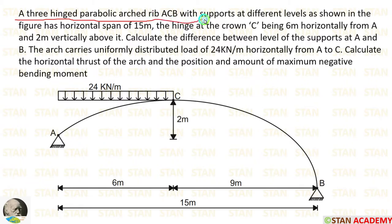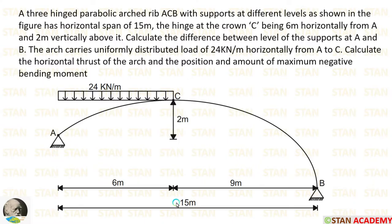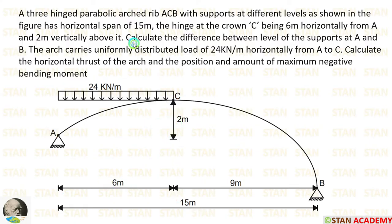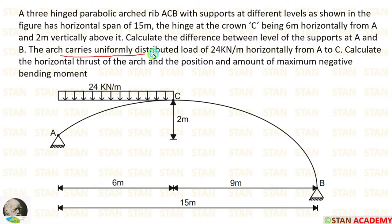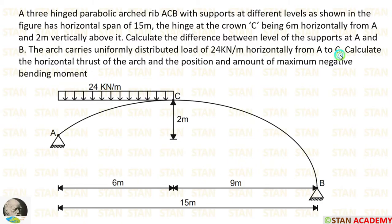A three-hinged parabolic arched rib with supports at different levels has a horizontal span of 15 meters. The hinge at the crown C is 6 meters horizontally and 2 meters vertically above support A. The arch carries a uniformly distributed load of 24 kN per meter horizontally from A to C. We need to calculate the difference between the levels of supports A and B, the horizontal thrust of the arch, and the position and amount of maximum negative bending moment.